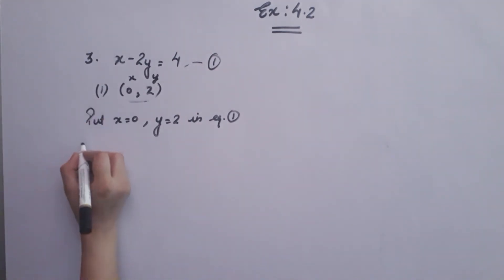Let us proceed. I am taking the left hand side first of all. If the two equal are right and left, then it is a solution. Otherwise, it is not a solution. The left hand side of x minus 2y. Put the value x as 0 and y as 2.